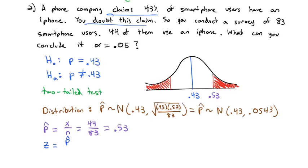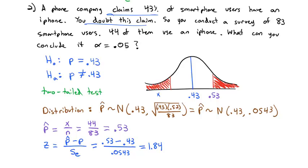Now we're ready to calculate our z value. Z is our sample proportion minus the hypothesized proportion divided by the standard error: 0.53 minus 0.43 divided by 0.0543. The z value is 1.84. So if we have x values on top, we'll put z values down below. When it's a z, we assume the mean is 0, and our value on the table is 1.84.